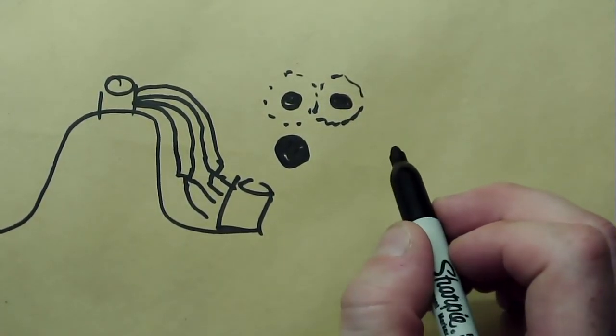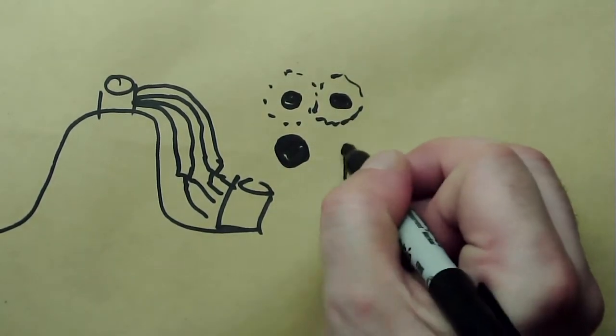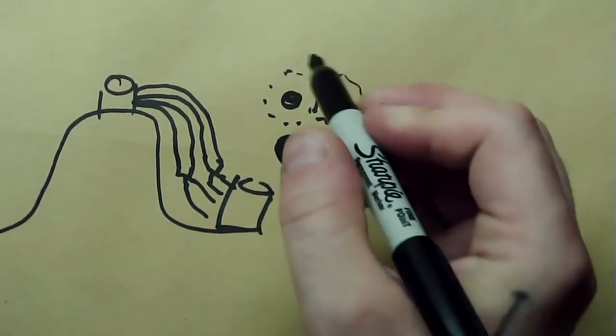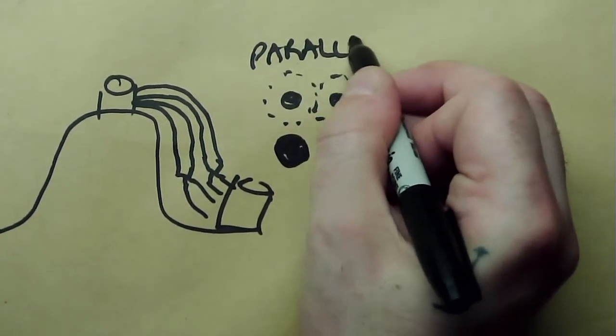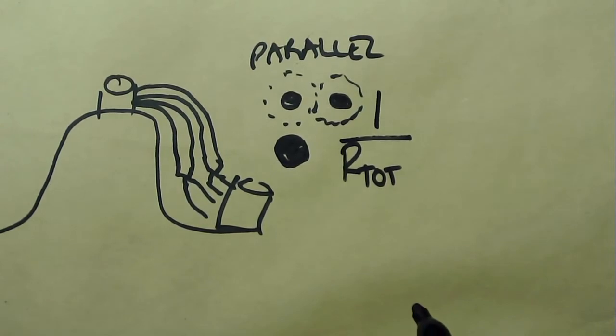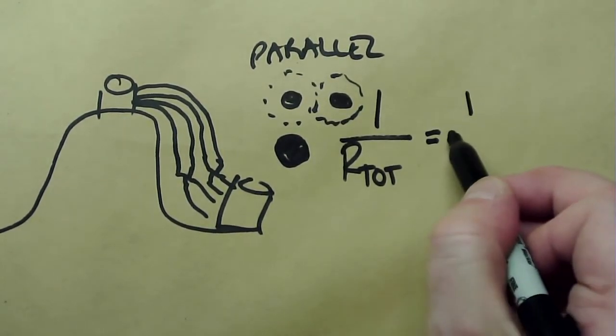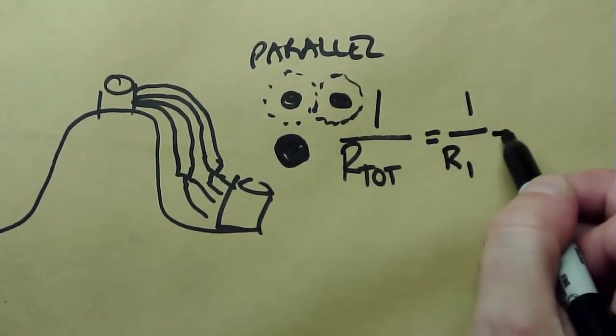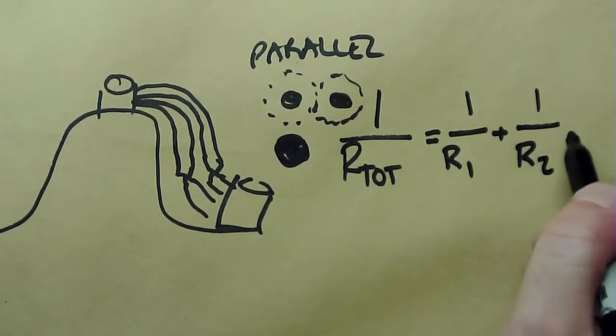And the formula for this, for resistance in parallel, is one over our total resistance equals the sum of the inverses of all of our resistors' values.